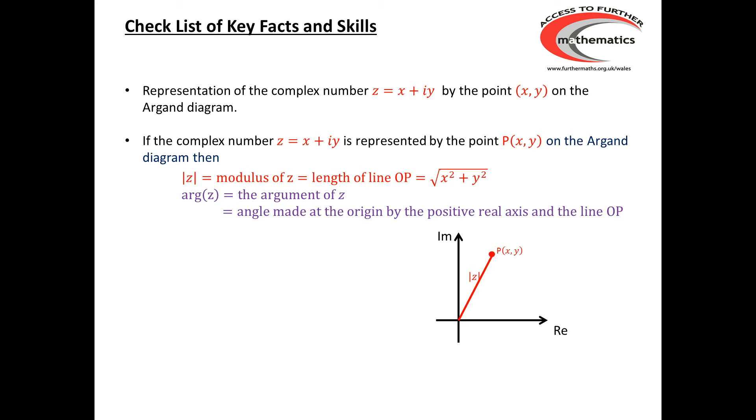And the argument of z is the angle made at the origin by the line going along the positive real axis and the line going from the origin up to the point P. Conventionally, arg(z) is given in radians, and it also, traditionally, is given as an angle between minus π and π.